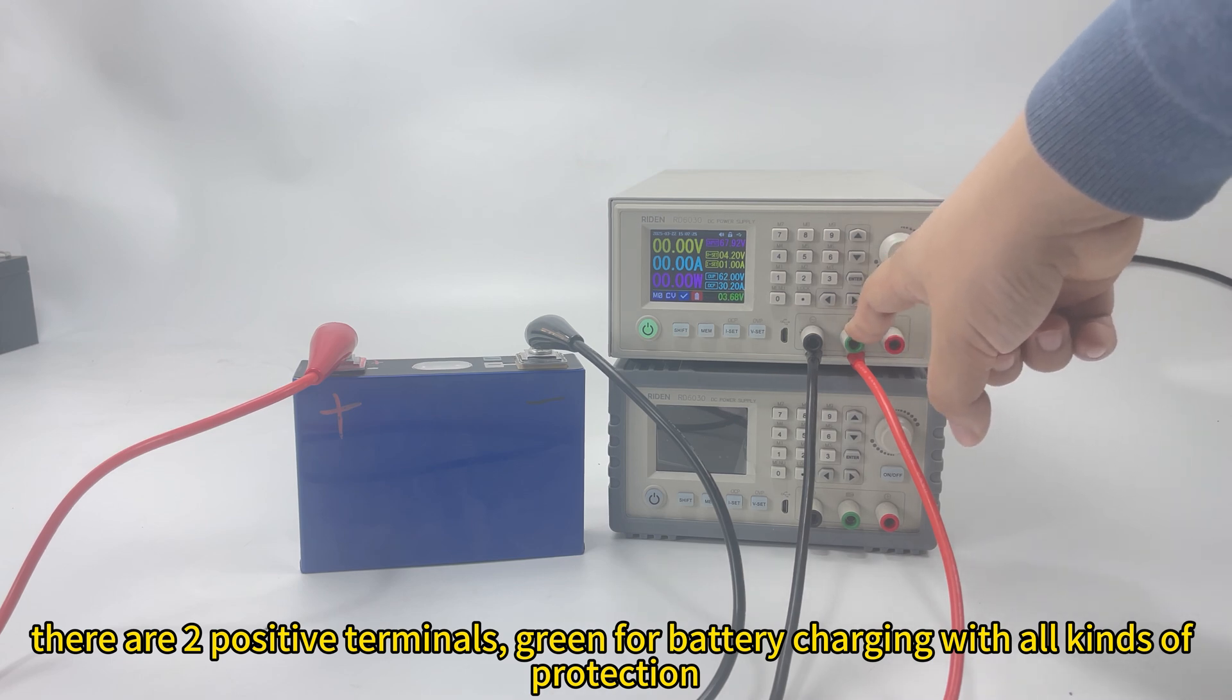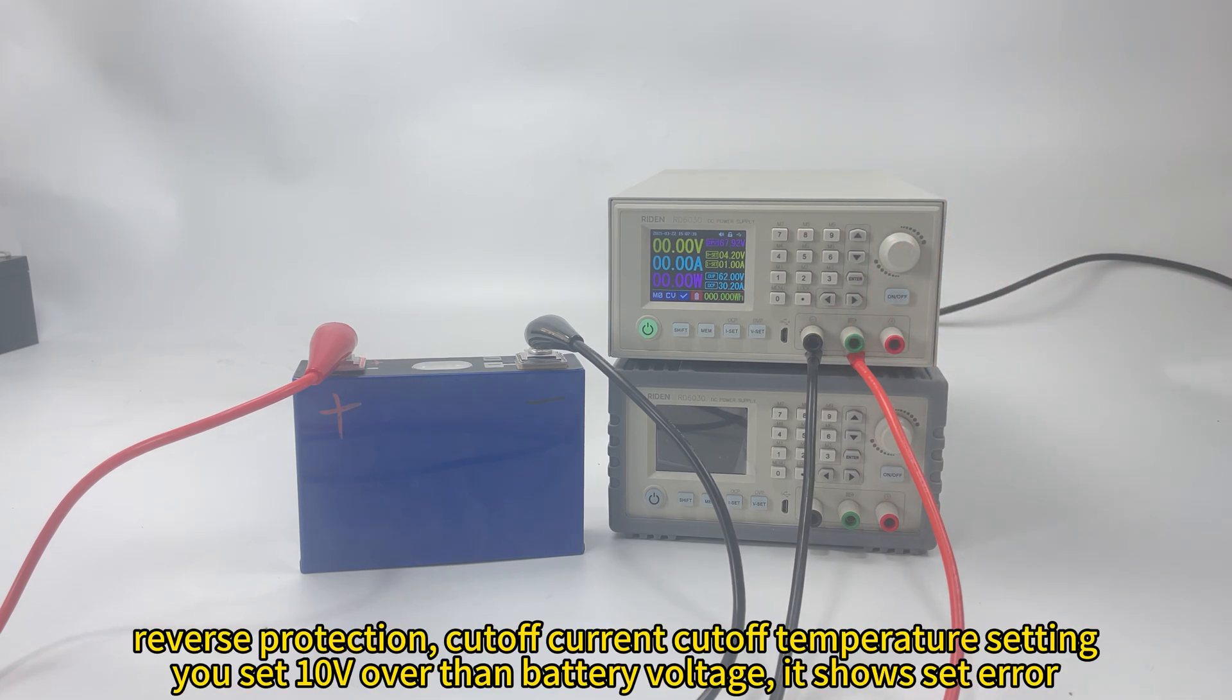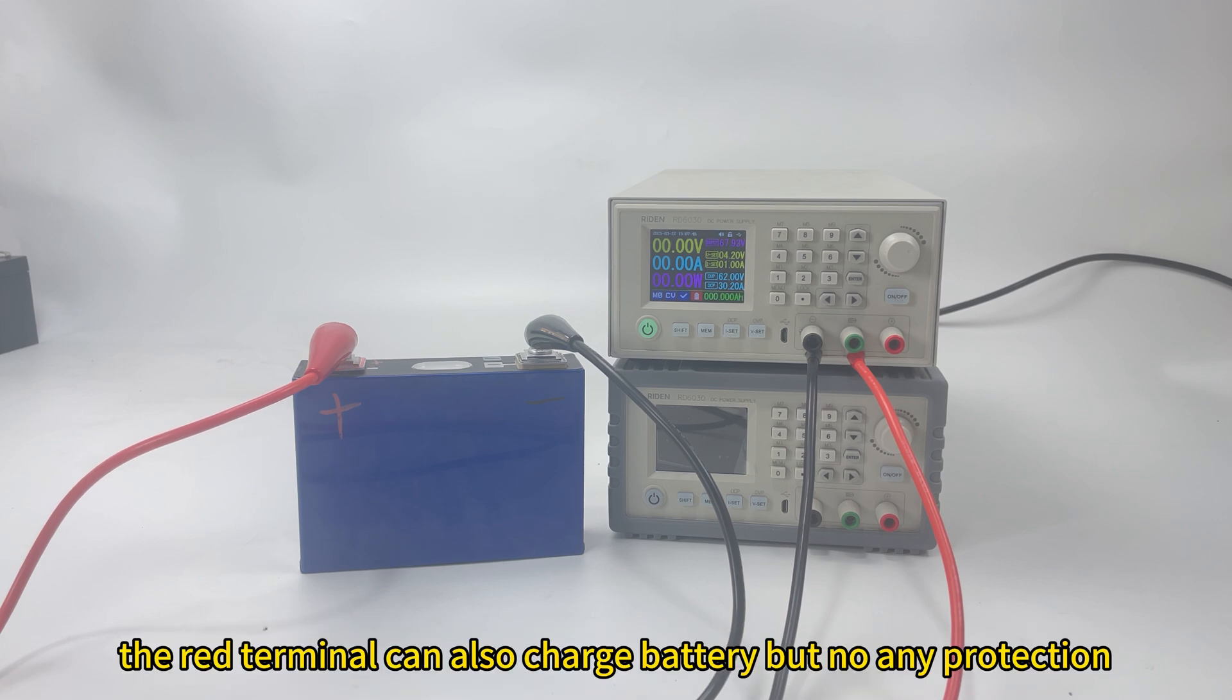The green terminal is for battery charging. It has all kinds of protection like reverse connection protection, cutoff current setting and cutoff temperature setting. If you set 10 volts over the battery voltage, it will show set error for the battery voltage.